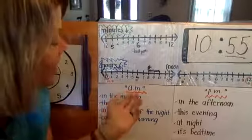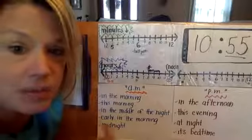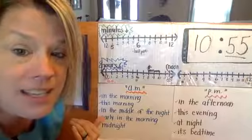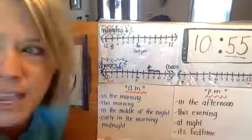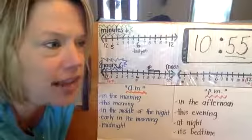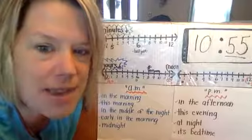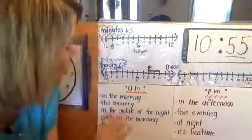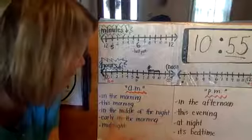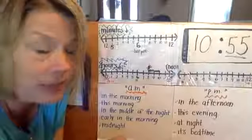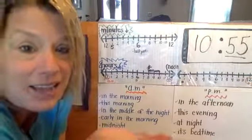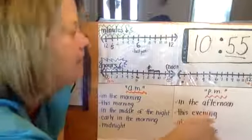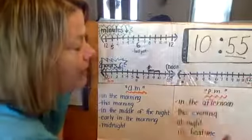So now you guys also have to talk about a.m. and p.m. That's a true story. Ms. Street thinks that's hard. If we're talking about a.m., we might use these phrases: in the morning, this morning, in the middle of the night, early in the morning, and midnight begins the a.m. hour. These phrases we use for p.m.: in the afternoon, this evening, at night, and it's bedtime.